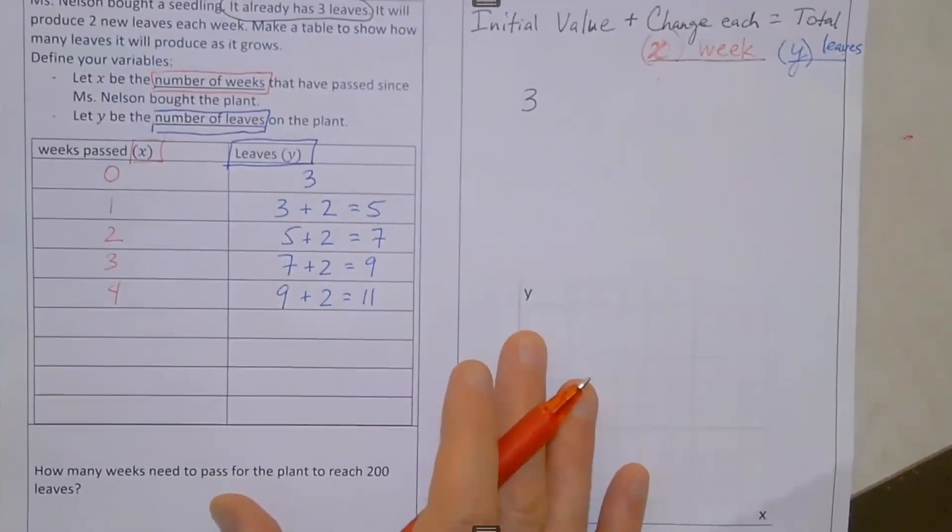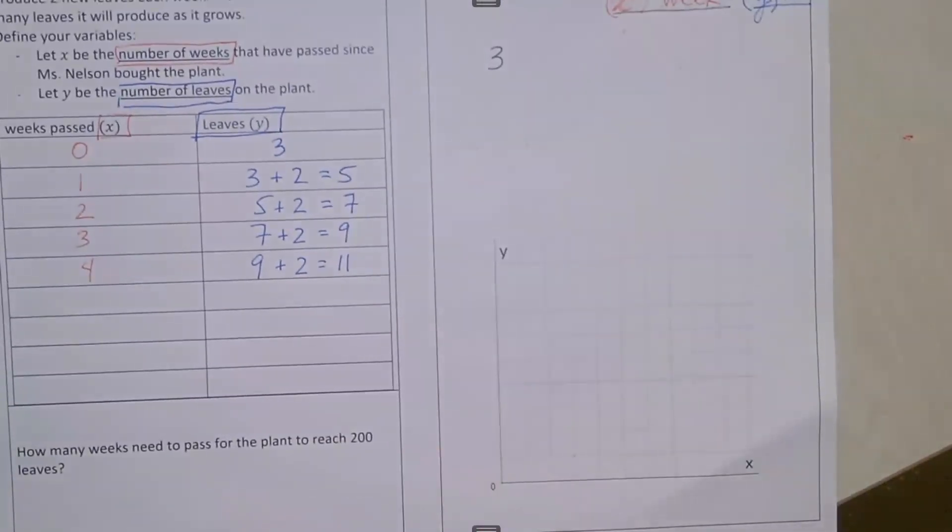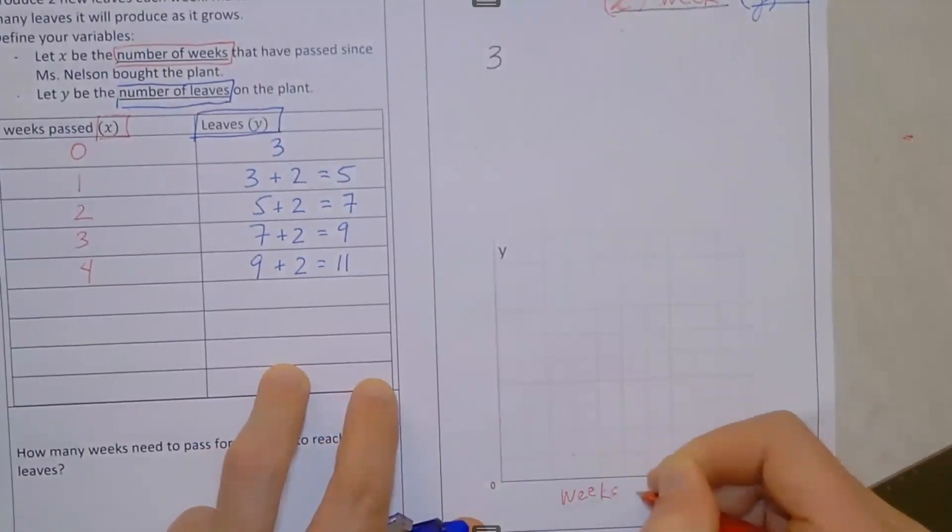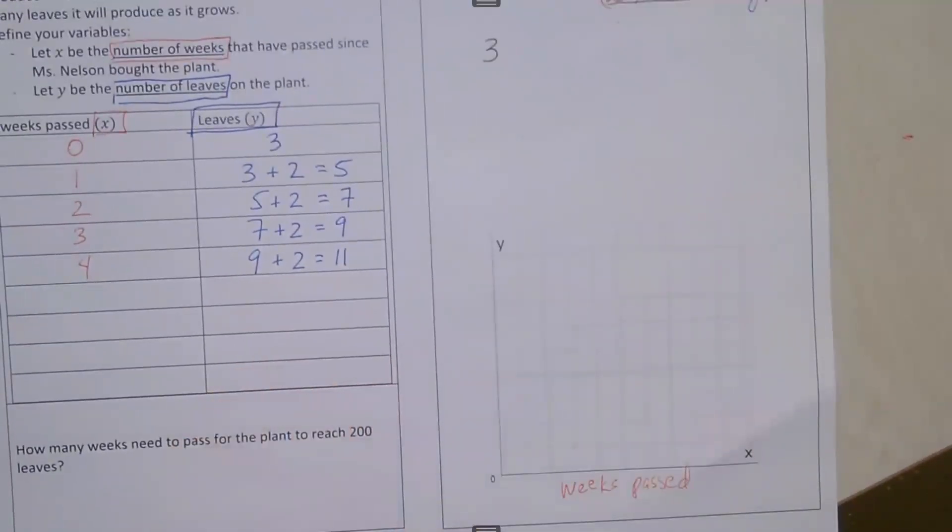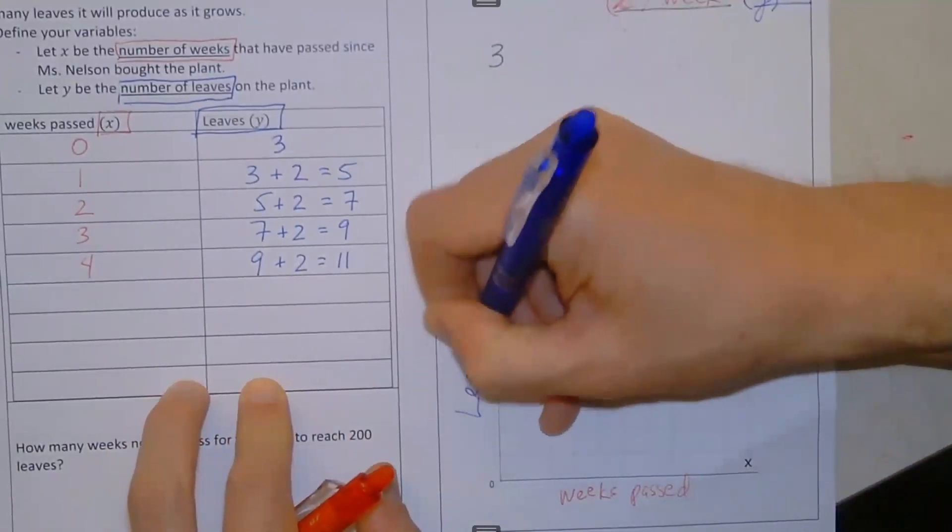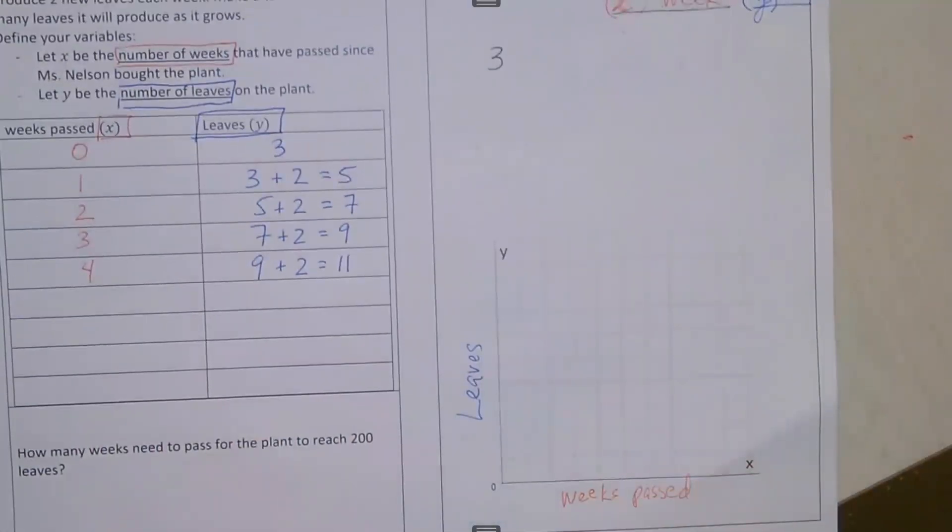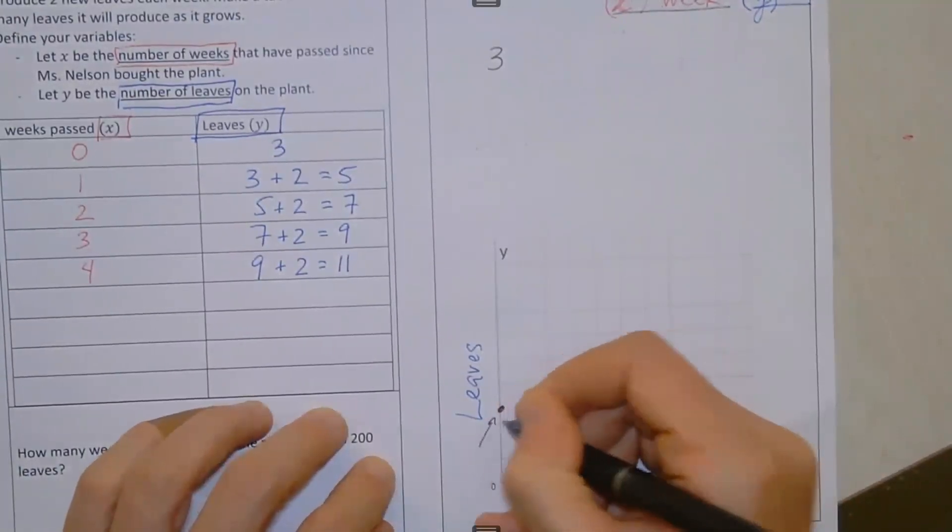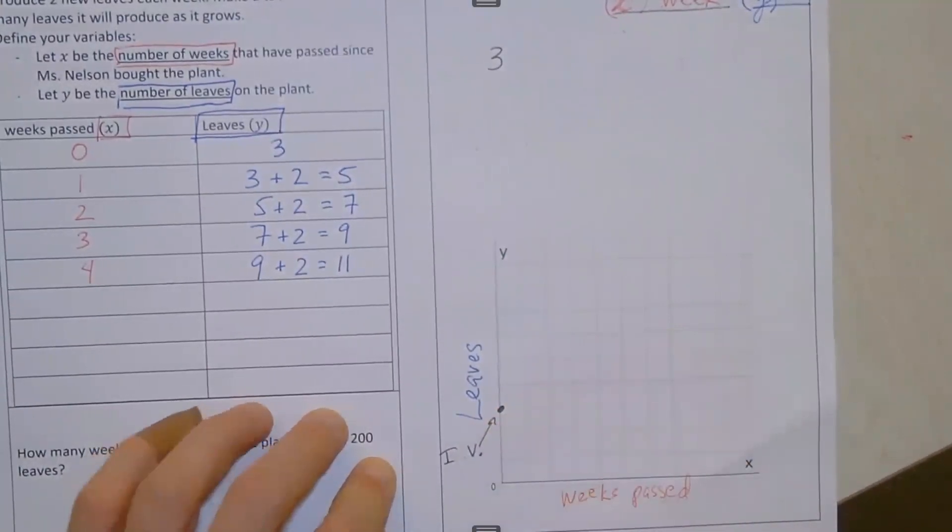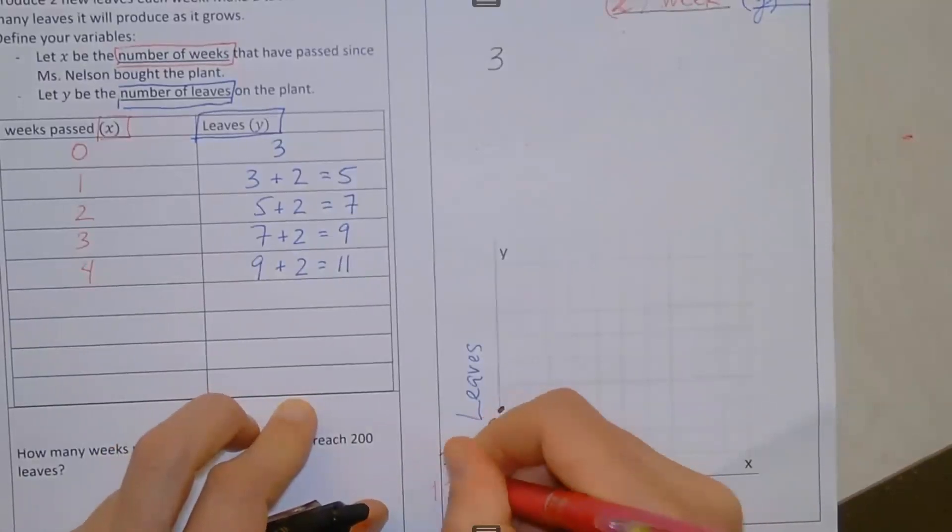So now let's plot these values. X, we said, is the number of weeks that have passed. And Y is our number of leaves. So after zero weeks at the beginning, we already had three leaves. And that is our initial value right there.